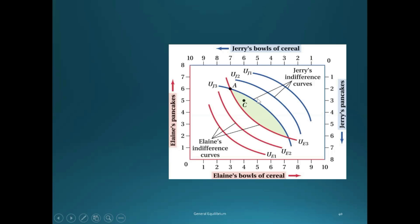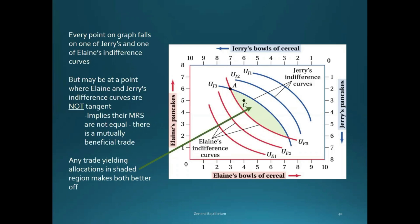When would you have a scenario where there's another allocation that makes both of them — or at least one of them — happier? We can see there's an area that falls below the indifference curve through point A for Jerry and above the indifference curve through point A for Elaine. You have a region preferred by Elaine up and to the right, and preferred by Jerry down and to the left, whenever the indifference curves cross. So when would it be exchange efficient? When they don't cross — when the point is a tangency between Elaine's and Jerry's indifference curves, where they touch and have exactly the same slope.